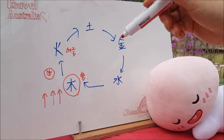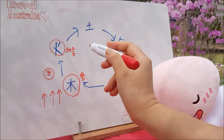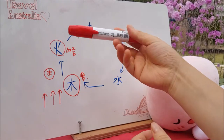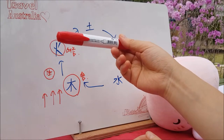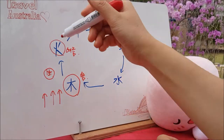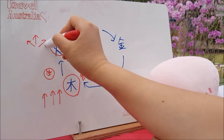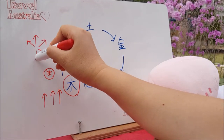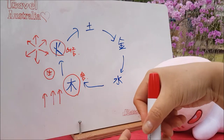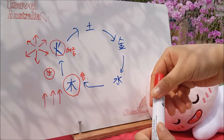여름은 화기운이라고 했습니다. 열정적이고 생명력을 뜻하는 시기이기 때문에 레드, 붉은색을 뜻하고요. 여름은 에너지가 수렴이 되는 게 아니라 반대로 뜨겁고 열정적이라서 밖으로 발산되는 기질이 있어요.